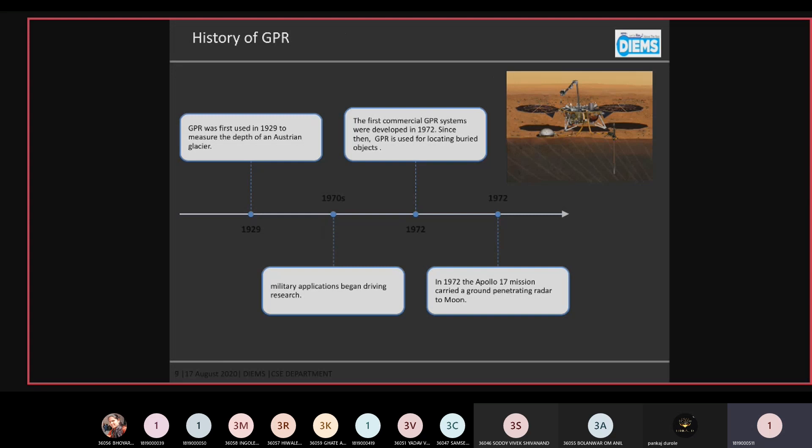The history of GPR. GPR was first used in 1929 to measure the depth of Australian glacier. In 1970, military application began driving researchers' attention. In 1972, the first commercial GPR system was available in the market. Since then, the GPR technology has taken a leap in locating buried objects. In 1970, Apollo 17 mission to the moon carried a ground penetration radar on board.